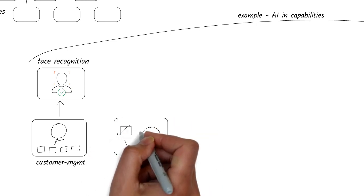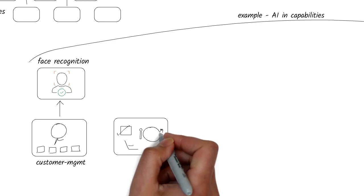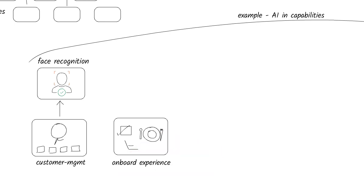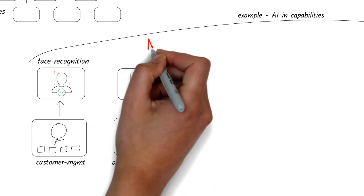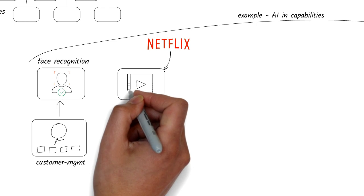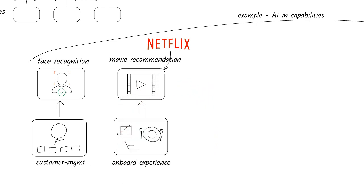My purchase event triggers the onboard experience management. This is where check-in happens, seats are assigned, and meal preferences are set. AI could enhance this capability by personalizing my movie recommendations by connecting with my Netflix account.